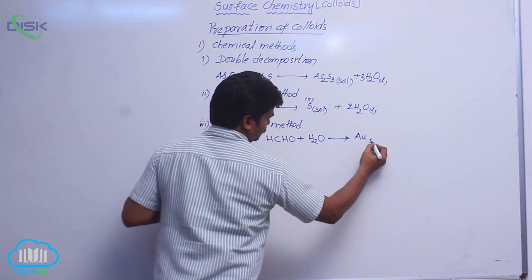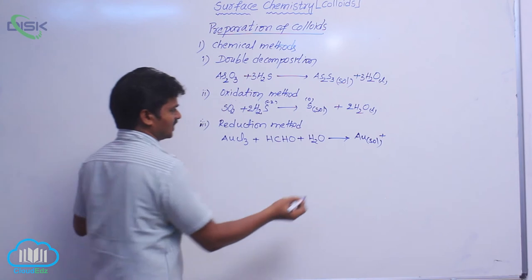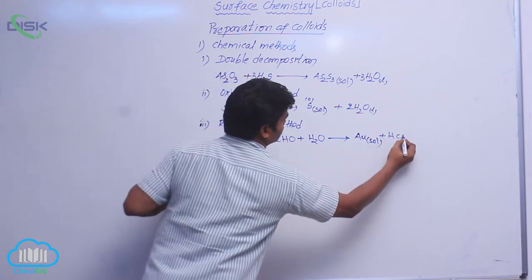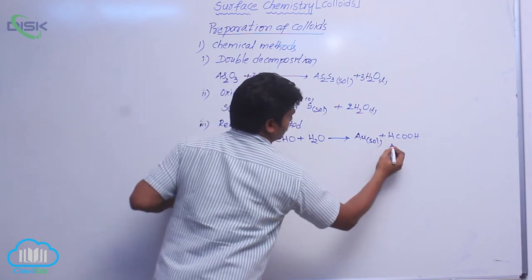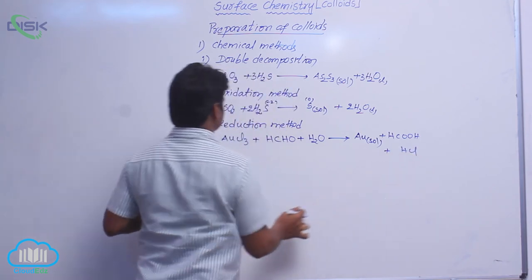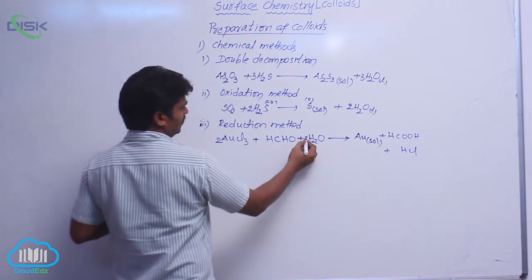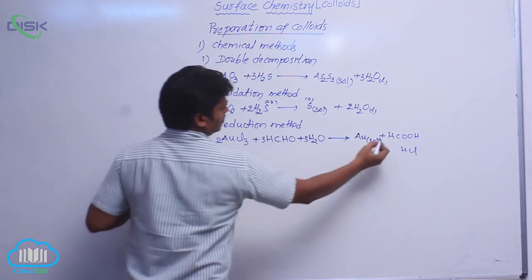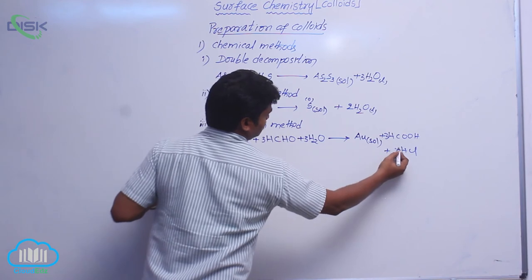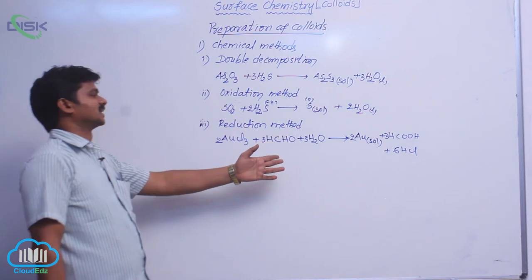This reaction is an example for reduction because gold from plus 3 state to plus 0 state. It is gold sol plus along with it some other compounds are also formed. That is formic acid HCOOH plus HCl. To balance this reaction, take 2 moles, then 6 chlorines, 3 moles, 3 moles, here also 3 moles, here 6 HCl, 2 moles of gold. Gold sol is prepared in this method.